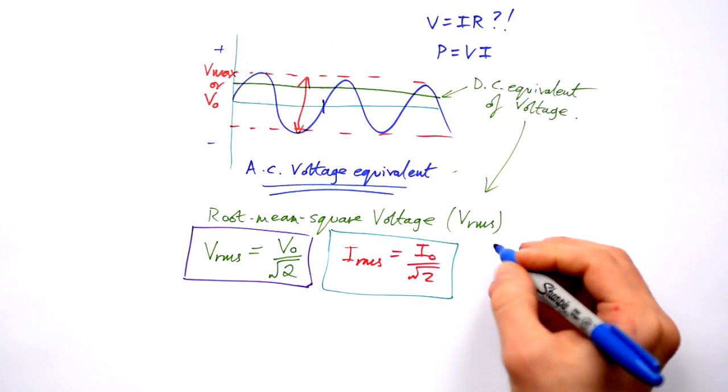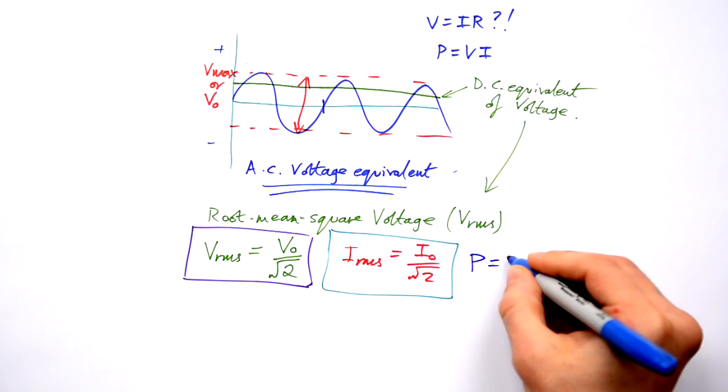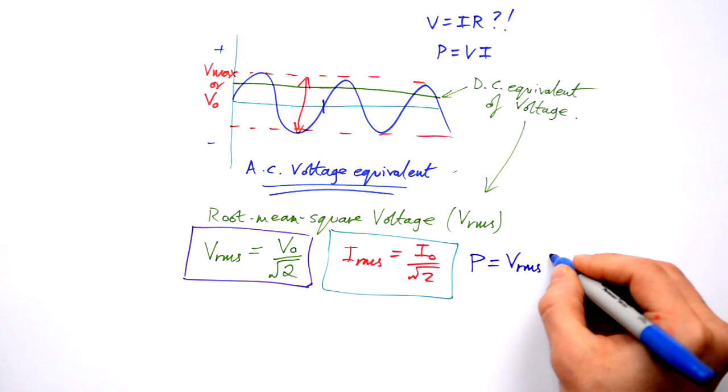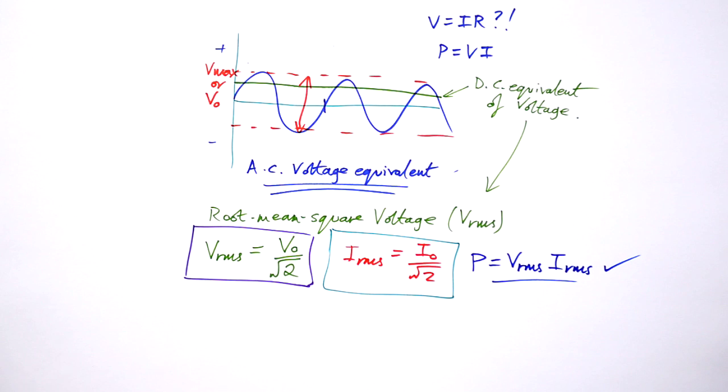So combining those two, in order to find out the power given by an AC current, all we have to do is take our VRMS times by our IRMS, job's a good one. So that's the only way that you can do any meaningful analysis of AC is by turning the peak voltages and currents into RMS values first. Once you've got your RMS values, you can use any of the equations that we know for circuits as per usual.